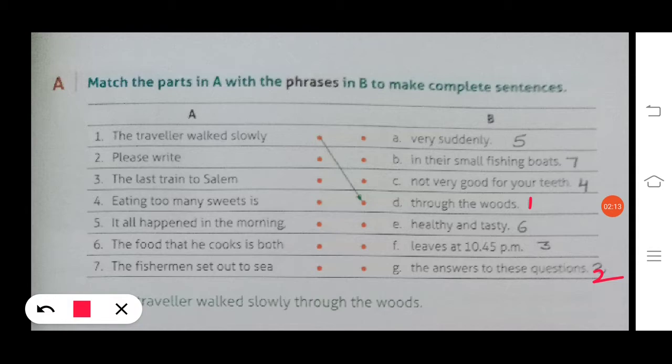Number two: please write the answers to these questions, that is G. Number three: the last train to Salem leaves at 10:45 p.m., that is F. Number four: eating too many sweets is not very good for your teeth, that is C.